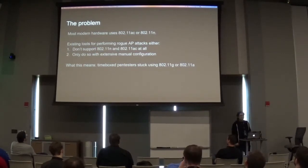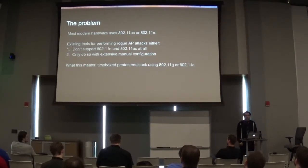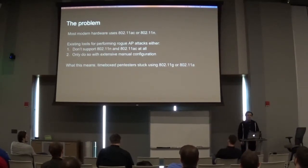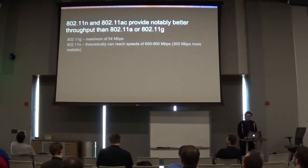The problem is that existing tools for performing these rogue AP attacks either don't support 802.11n or 802.11ac at all, or they do support it but you have to spend a lot of time editing config files and generally hating your life. And if you've been on a time-boxed pen test — and all pen tests are time-boxed because you want to use your time efficiently — that's a real problem.